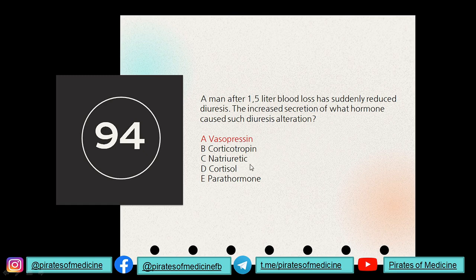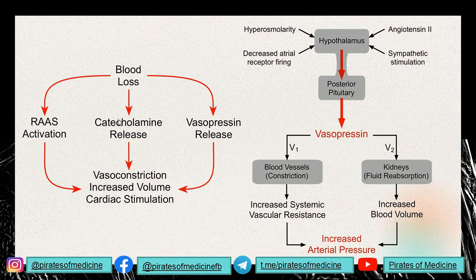Vasopressin is responsible for decreased diuresis. Blood loss causes release of catecholamines, vasopressin, and activation of the RAAS system. Vasopressin is released from the pituitary and does two things: it leads to blood vessel constriction and asks the kidney to absorb water and not excrete urine. This increases systemic resistance and blood volume, raising arterial pressure and compensating for blood loss.